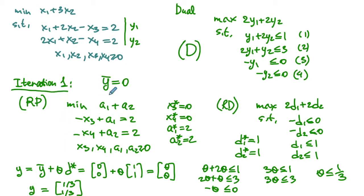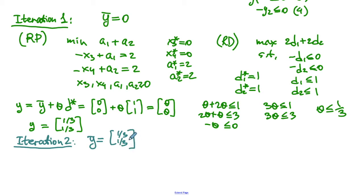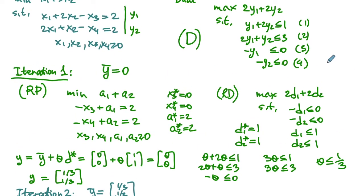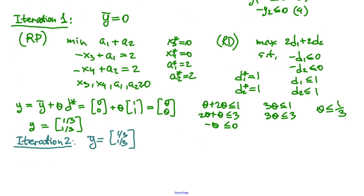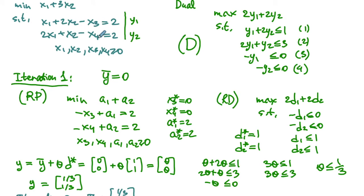For iteration 2, we set y_bar = (1/3, 1/3). Plugging this into the dual constraints, only the first constraint is binding — it was the winner of the ratio test. By complementary slackness, we keep only variable x1 in the restricted primal and ignore x2, x3, and x4.